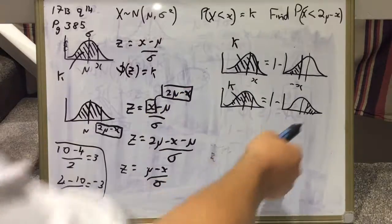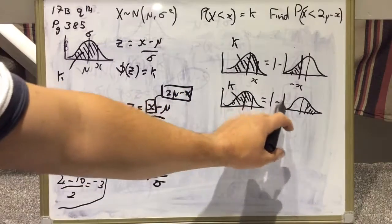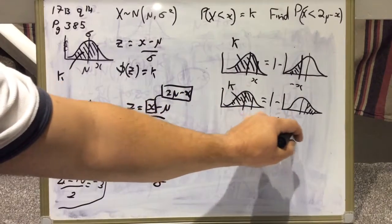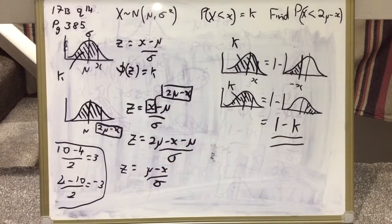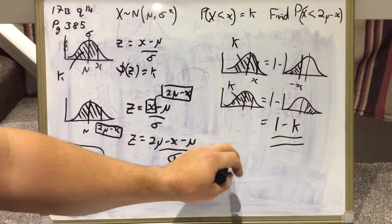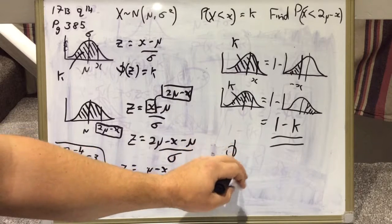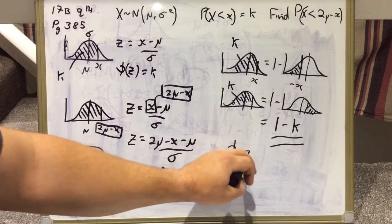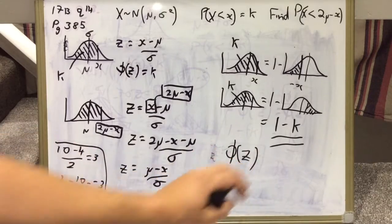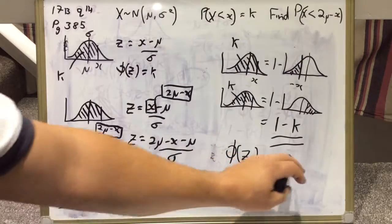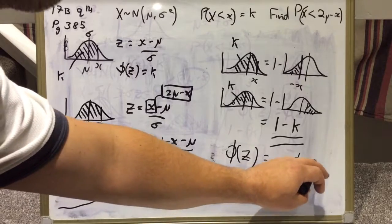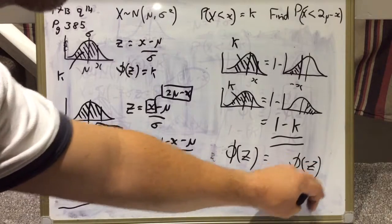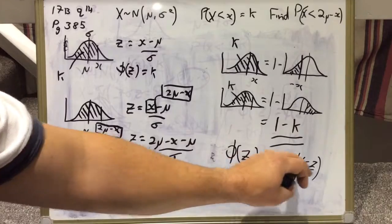Which in fact is our answer. The reason for that is because this plays on the property that if you're doing phi of a Z value, that is equal to the negative version of the Z value when you do one take away it. That is one of the key properties of normal distributions.